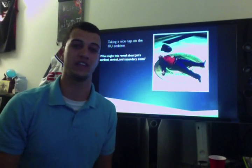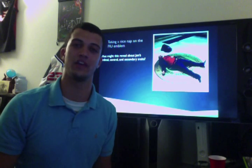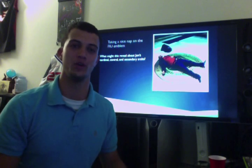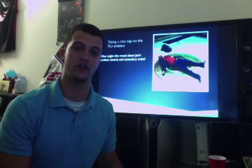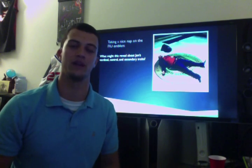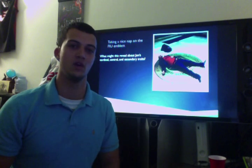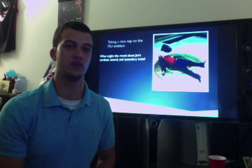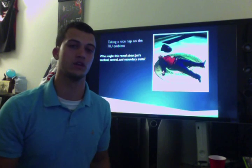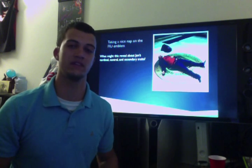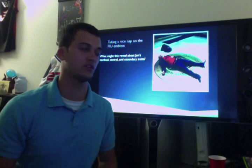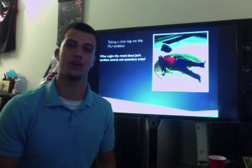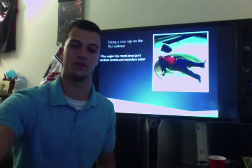This is a picture of me taking a nice nap on the FIU emblem, which we're all told at orientation is frowned upon and brings bad luck. What might this reveal about my cardinal, central, and secondary traits? But first, let's get a quick biography of Gordon Allport.